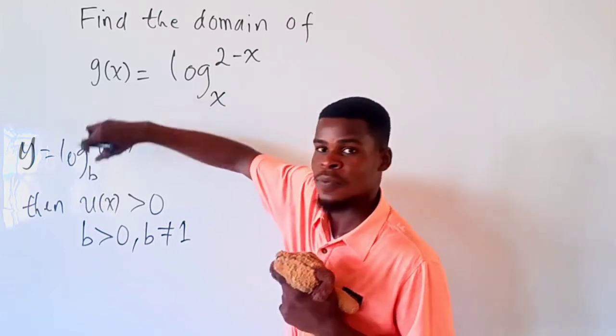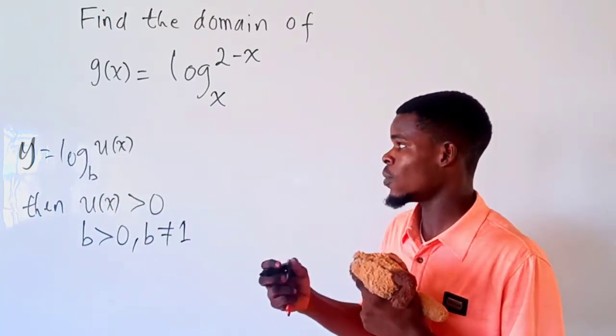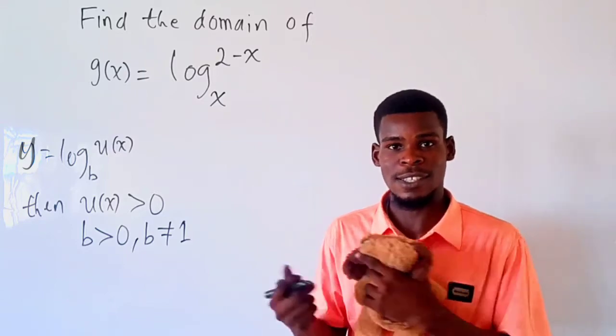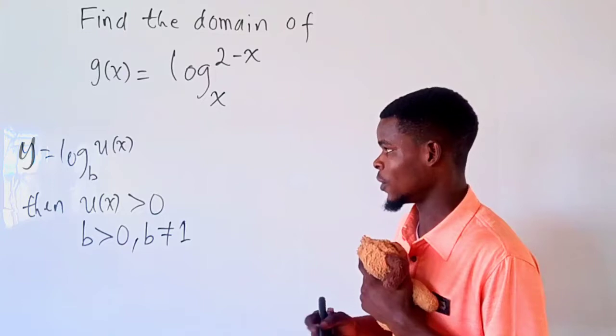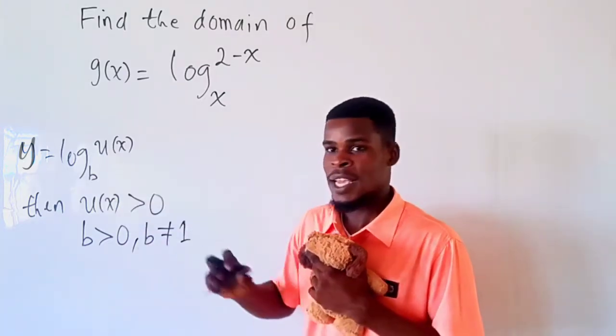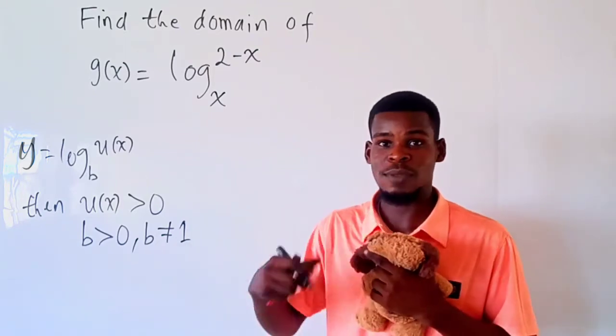So our emphasis is this: the logarithm of something, whatever we have here, should be greater than zero for a logarithm to be defined, because logarithm of negative numbers does not exist in the set of real numbers and logarithm of zero doesn't even exist. And the base should be a positive real number that is not equal to one for the logarithm to make sense.